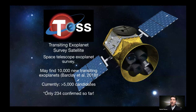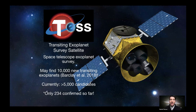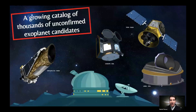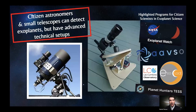One of the space telescopes gathering a lot of data on exoplanets using the transit method is called the Transiting Exoplanet Survey Satellite, or TESS. It may actually find 10,000 new transiting exoplanets through its lifetime. However, there's only 200 of them confirmed so far. So there's a growing catalog of thousands of unconfirmed exoplanet candidates from TESS and other space telescopes and ground-based observatories.